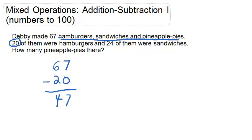When we take hamburgers out, I'm going to cross it off. We have 47 items left, and those are going to be made up of sandwiches and pineapple pies. So then it says 24 of the 67 were sandwiches.